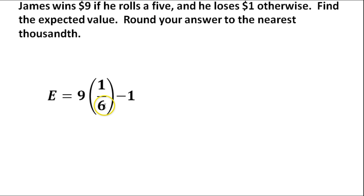If he's going to roll a 5, it's going to be 1 sixth. So the probability otherwise, the probability that he's not going to roll a 5, would be 5 sixths. So we're going to multiply these, 9 times 1 sixth, and then we're going to subtract 1, because he's going to lose $1, times 5 sixths, his probability of rolling any other number besides 5.